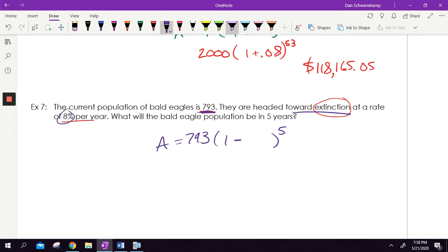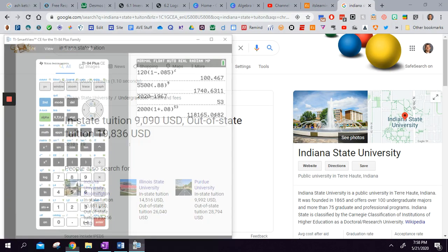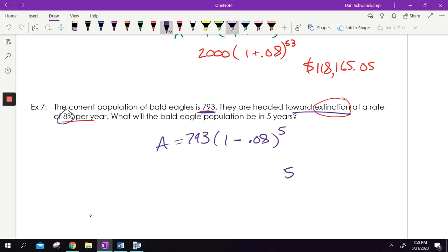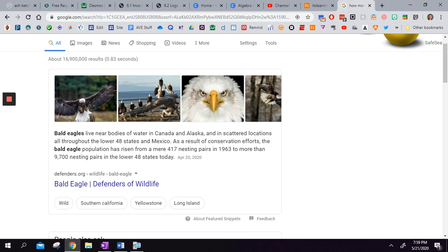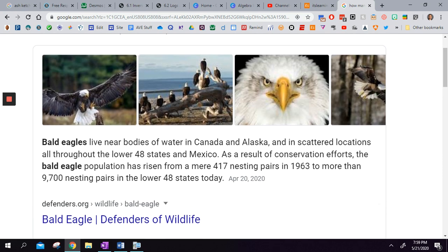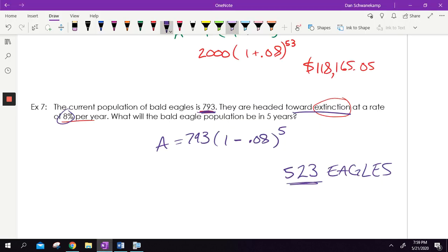793, parentheses, one minus 0.08. We're getting less each year. We're raising it to the fifth power. In five years, we're only going to have 522. We'll round it up to 523 eagles left. Be strong, eagles. See if you can hold on. Good news. I Googled it. In the past, there were only 417 in 1963. So not as many bald eagles in that year. Now there are over 9,700 nesting pairs of bald eagles in the United States. I don't know what that means, but it seems better than our sad story of only 523 eagles. So good news for us. The eagles are strong.